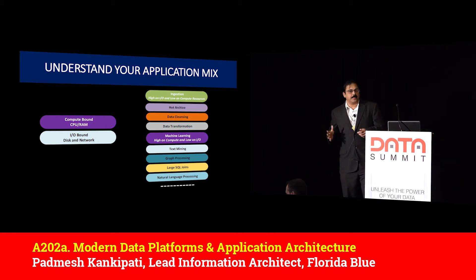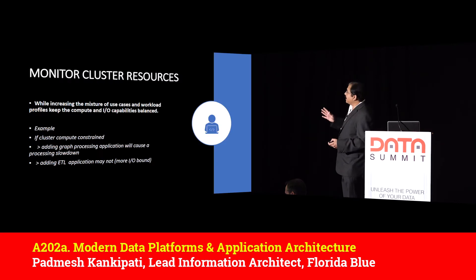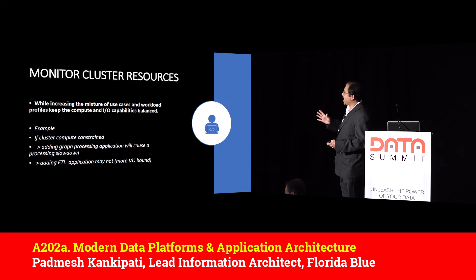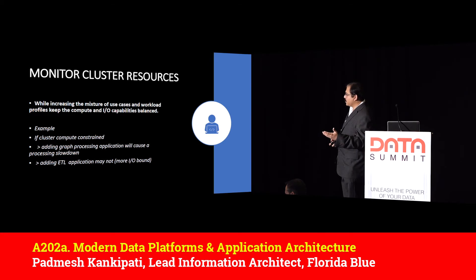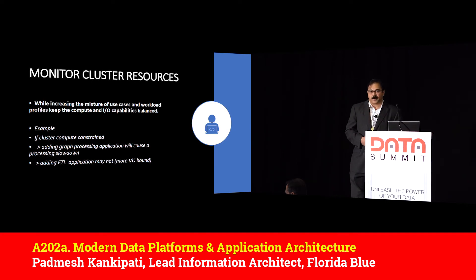As you grow, use monitoring tools to ensure compute and IO are balanced — otherwise your Hadoop system will be very slow. As you increase the mixture of use cases and workload profiles, keep compute and IO capabilities balanced. For example, if the cluster compute is constrained and you're at high compute capacity, adding a graph processing application will cause a processing slowdown, while an ETL application may not.